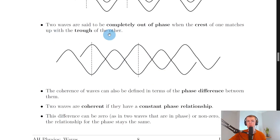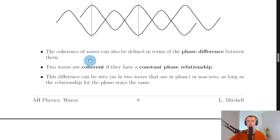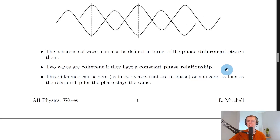Two waves are said to be completely out of phase when the crest of one matches up with the trough of the other. Here you can see the crest of one wave matching up with the trough of the other. The coherence of waves can also be defined in terms of the phase difference between them.